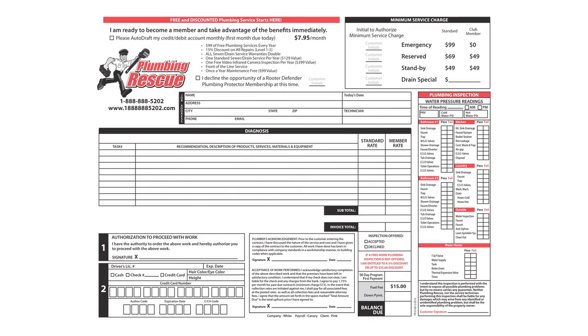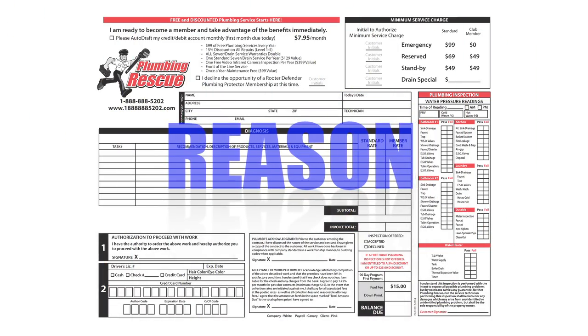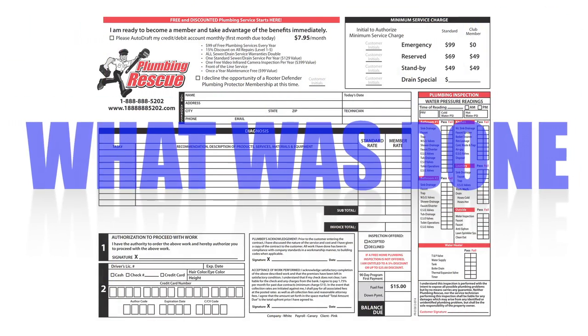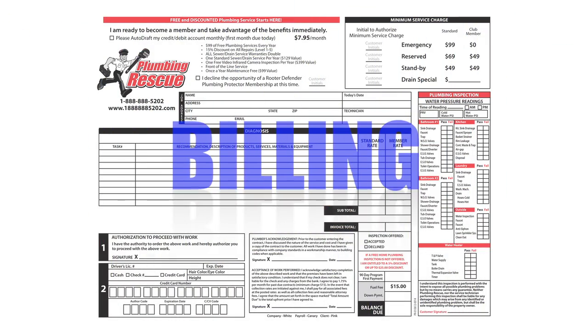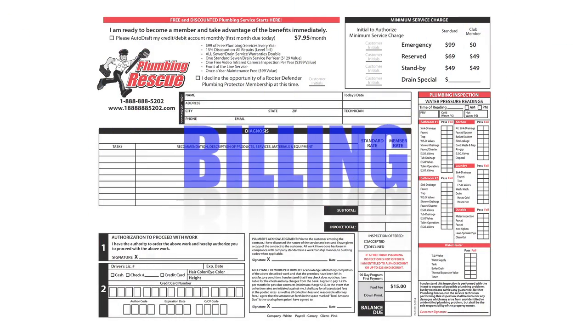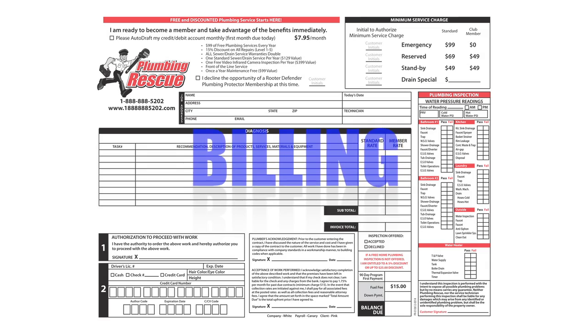The invoice form is the primary form you will use when going to any service call. From the reason for the service, what was done, and billing will all be shown here. There are only six sections to the invoice form.